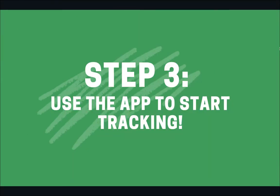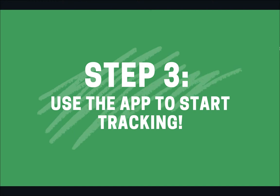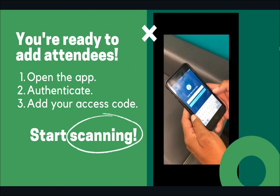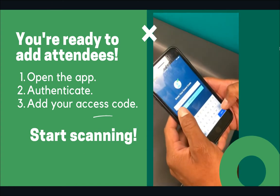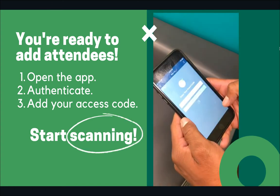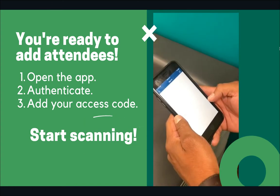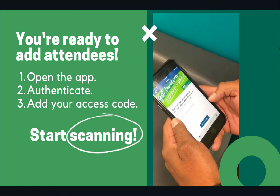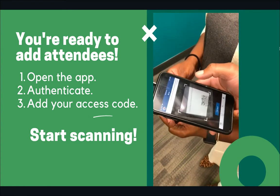Once members have the access code, they're ready to open the app and start adding participants. Enter the code into the mobile app, tap Start Session, and you'll be prompted to sign in. Type in your credentials, then start scanning.